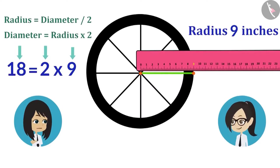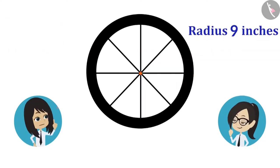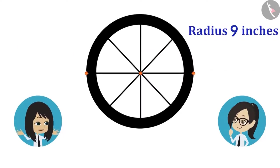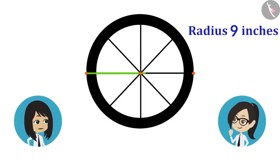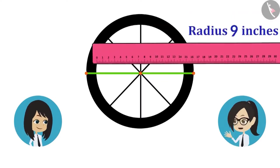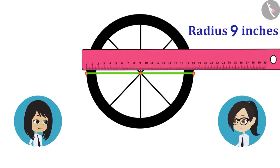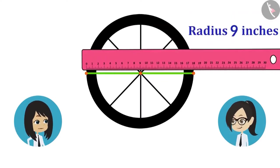Why not measure the diameter of this wheel so that we know that our calculation is correct? To measure the diameter, we have to draw a straight line joining both sides in such a way that the line goes through the center. Now let's measure this too. See, the diameter is also 18 inches on the scale.